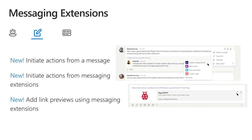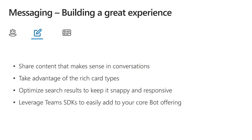Message extensions are really powerful for talking about things in other systems, and we're adding new features that will be super interesting. For messaging extensions, keep in mind they're meant for sharing content that makes sense in conversations — not everything your application has. You can take advantage of rich card types: adaptive cards, hero cards, thumbnail cards. You want to keep your search results snappy and responsive. You can also combine code for the messaging extension and bot, using the same SDKs and code behind the scenes for everything.